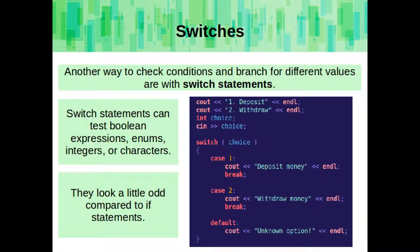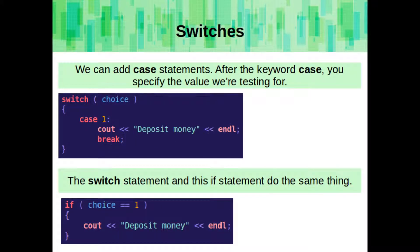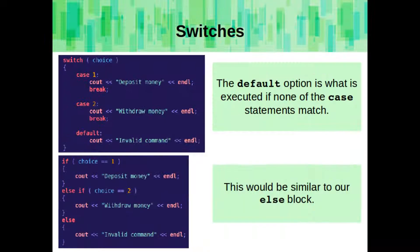Another way to check conditions and branch for different values are with switch statements. Switch statements can test Boolean expressions, enums, integers, or characters. They look a little odd compared to if statements. Switch statements start with the switch keyword. The controlling expression is within the parentheses. The case statement that we write will be based on the value of the controlling expression — in this case, the value of the integer choice. Then we add case statements. After the keyword case, you specify the value we're testing for. The switch statement and this if statement do the same thing, checking whether the value of choice is 1. Notice that the case statements have a break command before the next case statement. When the break is hit, it exits the switch statement, so it doesn't execute additional code under another case. The default option is what is executed if none of the case statements match, similar to our else block.